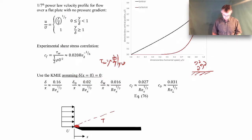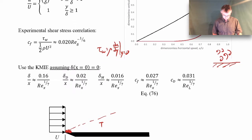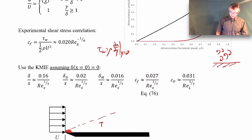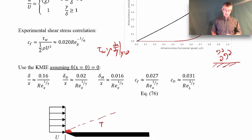When we go through the Karman momentum integral equation approach, we end up with these expressions. Here is the 99% boundary layer thickness, and unlike the laminar boundary layer expressions, here we have a Reynolds number raised to the one-seventh power. Then we also have displacement thickness, momentum thickness, friction coefficient, and drag coefficient. These are what we get from the one-seventh velocity profile, based on experimental data for both the velocity profile and shear stress.